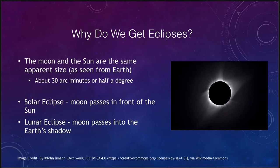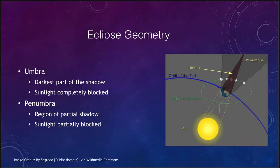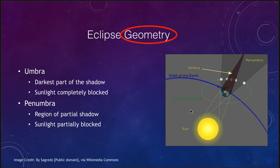What is the geometry of an eclipse? In the case of a lunar eclipse, the earth is in between the sun and the moon. The earth casts a shadow that keeps the sun's light from reaching the moon, making it appear dimmer in the sky and in fact blocking out all of that light.